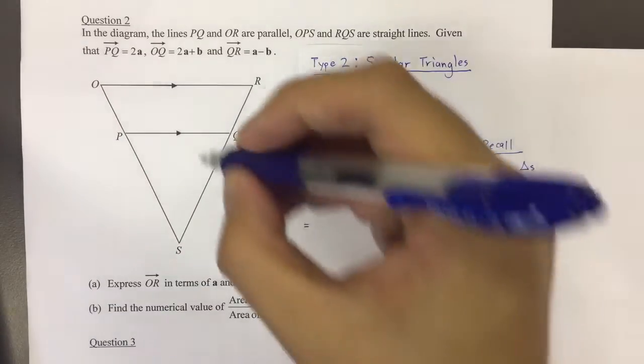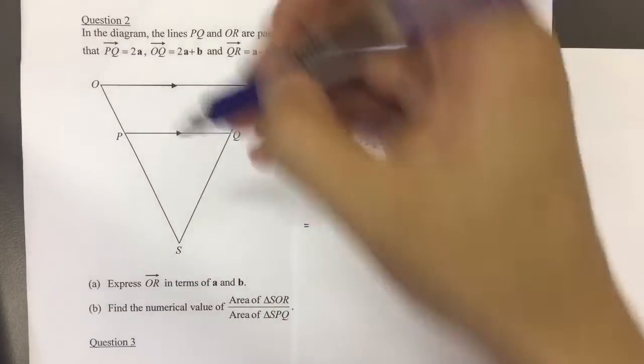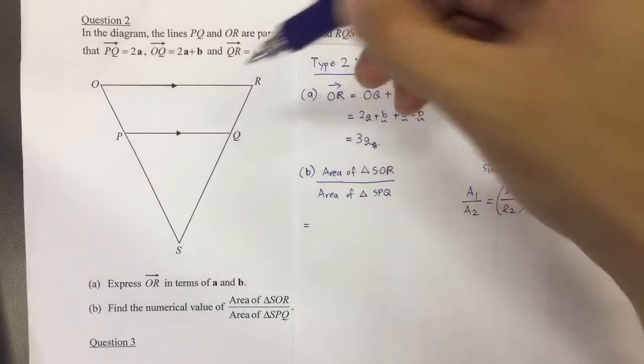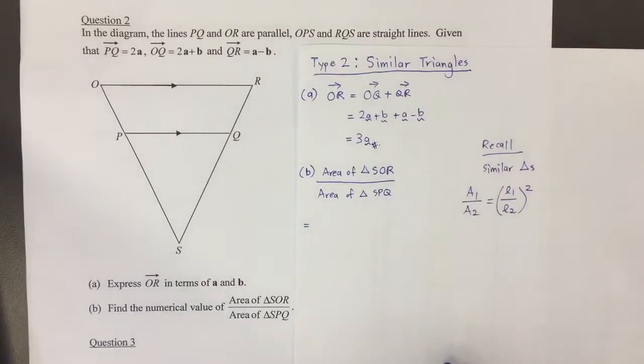For example, we realize that, oh, actually, OR is already 3A. Let me use my pencil to write that.